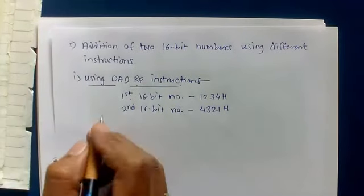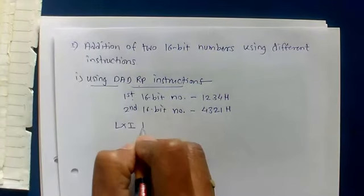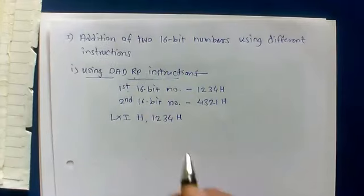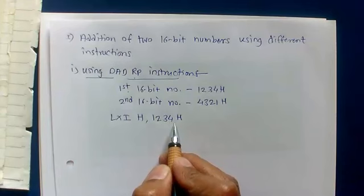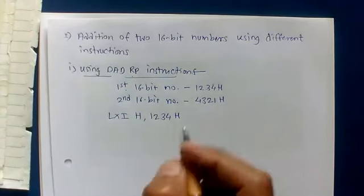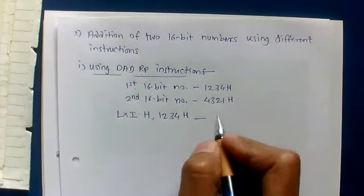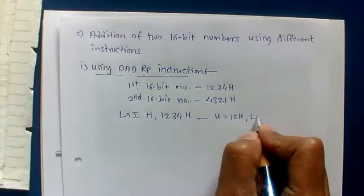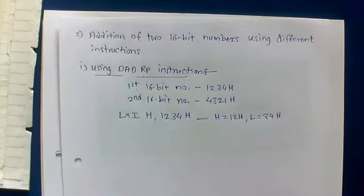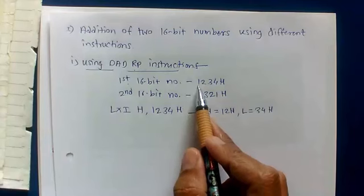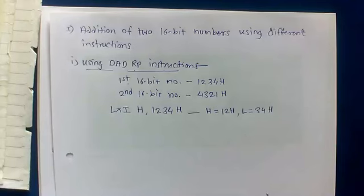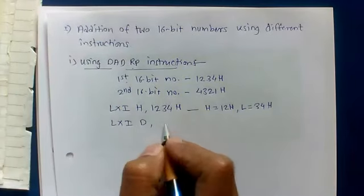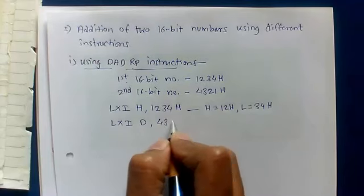The first instruction in this program is LXI H, 1234H — we are taking the first 16-bit number 1234H into the HL register pair. After execution of LXI H, H register gets 12H and L register gets 34H. The next instruction is LXI D, 4321H — loading the second 16-bit number into the DE register pair.